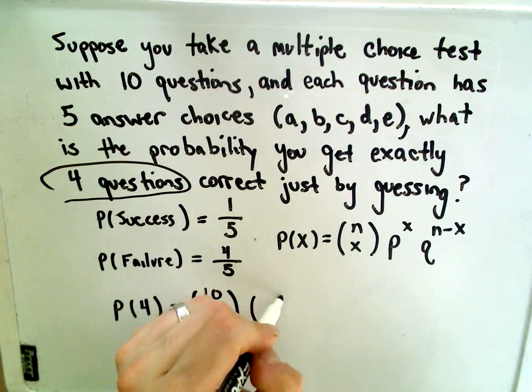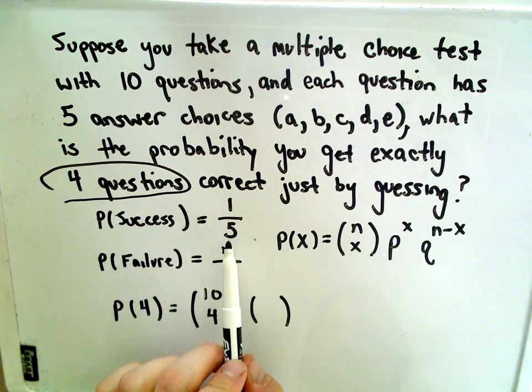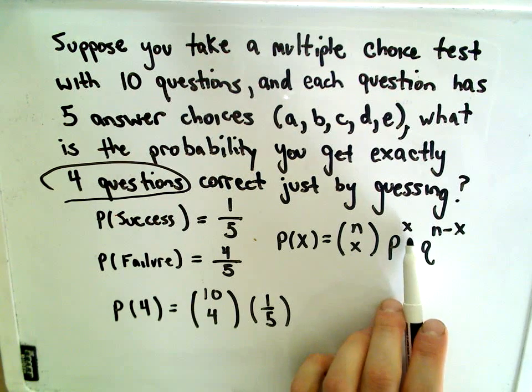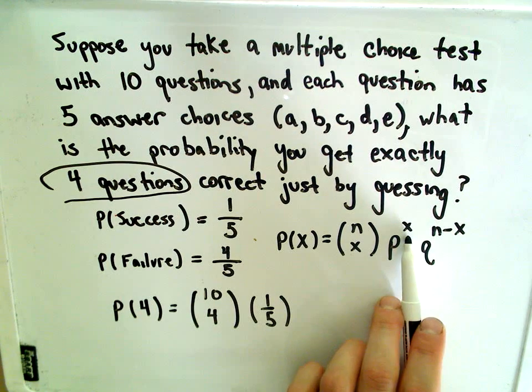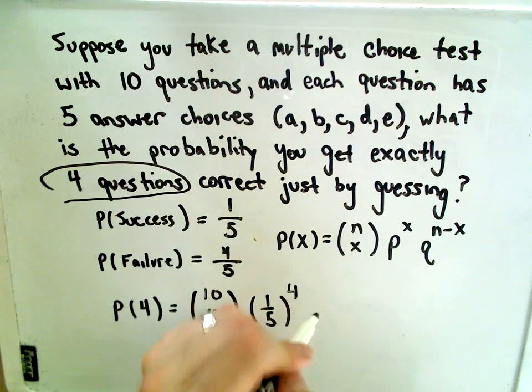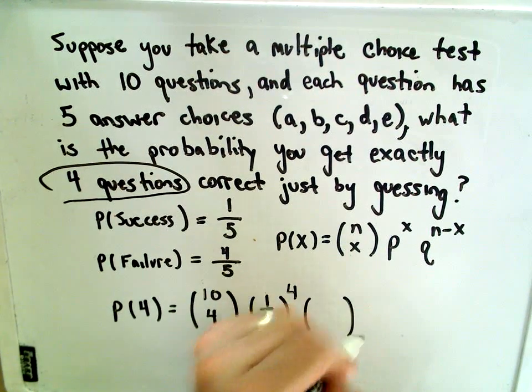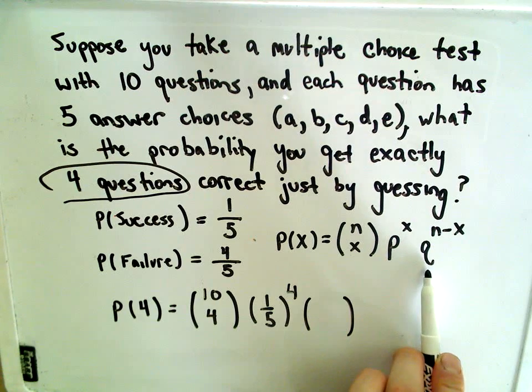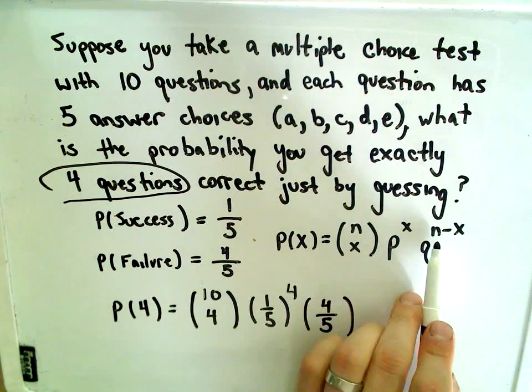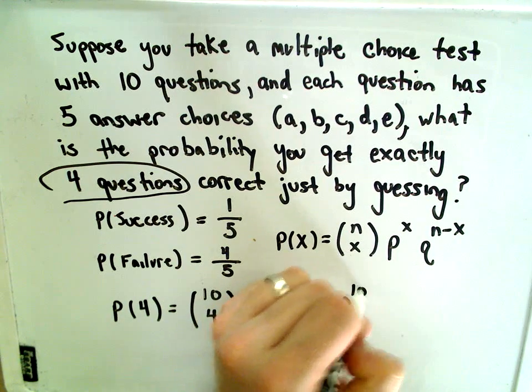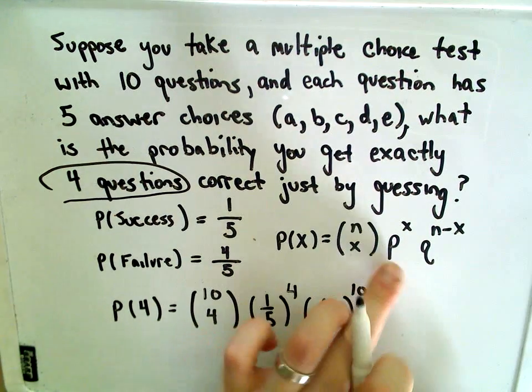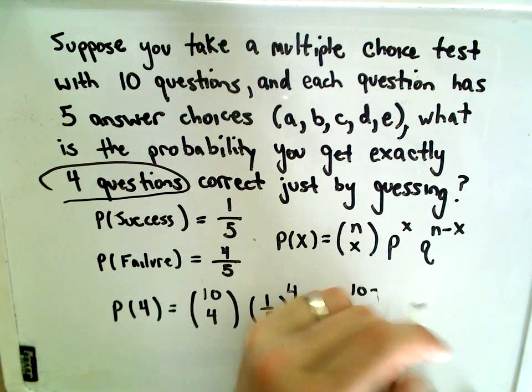Again, the probability of getting a question answered correctly, the probability of success, that's one-fifth. Then it says we need the number of successes as the exponent. Well, we want four successes, that is, we want to get four questions correct. And then we take the probability of failure, which is four-fifths. And then it says we take the total number of trials, which is ten, minus the number of successes, which in this problem, again, is four.